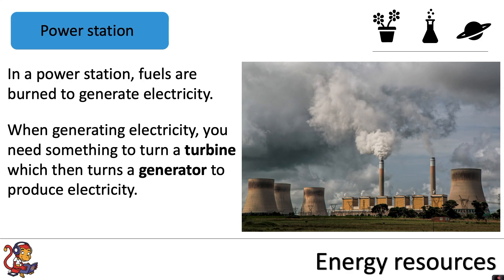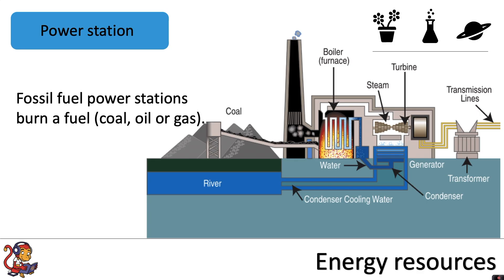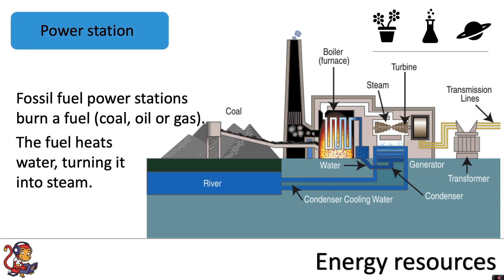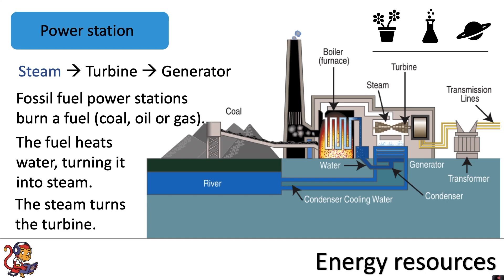Now we'll look in a little more detail about how a power station works. Fossil fuel power stations burn a fuel — for example, coal, oil or gas — to heat water, turning it into steam. The steam turns a turbine, which then turns the generator. So in the diagram, coal is burned to heat water, that water turns into steam and travels to the turbine, which turns the generator to generate electricity. That electricity is then transmitted across the national grid to millions of homes.